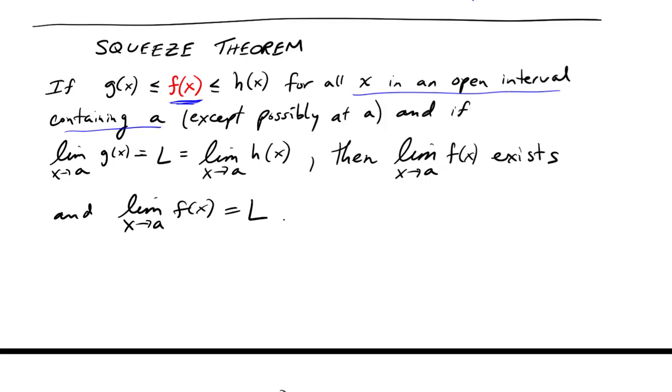If the limit as x approaches a of g of x is L, and that's also the limit as x approaches a of h of x, then we know two things. The limit of f, which is stuck in between the two, must also exist, because both of the g and h existed. And because both g and h were L, the limit as x approaches a of f of x must also be L. This is a case where we have a very difficult f of x, and we're going to use simpler g and h's, which are much easier to take the limits, and use them to find the limit of f.